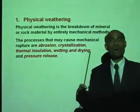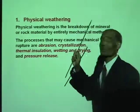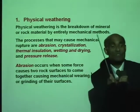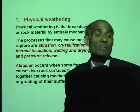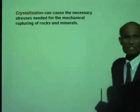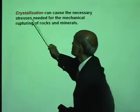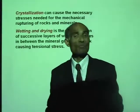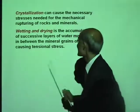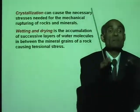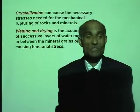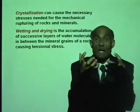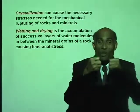Abrasion occurs when some force causes two rock surfaces to come together, rubbing each other and causing mechanical weathering. Crystallization can cause the necessary stresses needed for the mechanical rupturing of rocks and minerals. Wetting and drying is the accumulation of successive layers of water molecules between the mineral grains of a rock, causing tensional stresses — particularly when water accumulates between layers. When water cools down and ice forms, it expands, and that causes physical weathering.